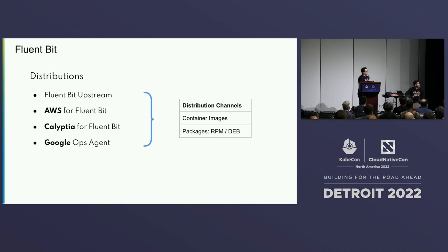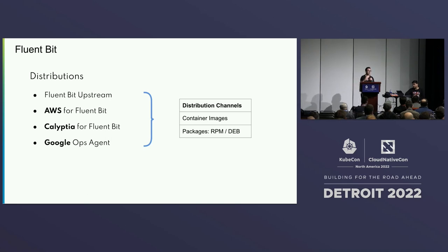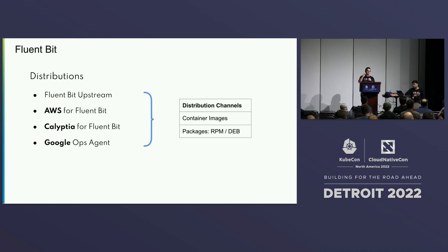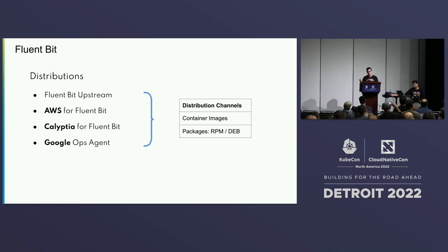FluentBit can be retrieved and consumed from different places. You can follow the upstream releases — a new minor version is released every two weeks. But if you want to run in a more long-term stable way, there are distributions of FluentBit based on that upstream but supported, like AWS for FluentBit, Calyptia for FluentBit, and Google Ops Agent, which Google uses for their own customers. You can also get container images, packages for Debian, Red Hat, Rocky Linux, or any kind of distribution. Even CentOS 6 — you would not imagine how many people are still running CentOS 6.